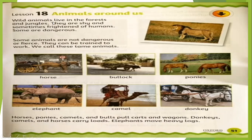Let's read once again. Wild animals live in the forest and jungles — where do wild animals live? They live in the forests and jungles. They are shy and sometimes frightened of humans. Some are dangerous, like lion, tigers, wolf, hyena, snake. Some animals are not dangerous or fierce — they can be trained to work. We call these tame animals. Tame animals like horses, ponies, camels, and bulls can pull carts and wagons. Donkeys, camels, and horses carry loads. Elephants move heavy logs. Page 51 completed.